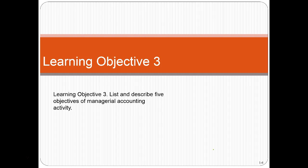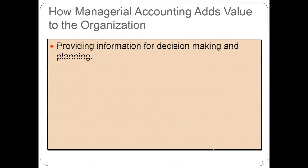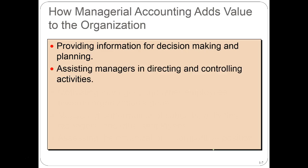Learning objective three: list and describe five objectives of a managerial accounting system. Everything we do falls into one or more of these core objectives. First, providing information for decision making and planning. When we put a theme park in place, there's a lot of analysis involved as to whether it's going to be financially beneficial — long-term estimates in terms of revenue to see if it's a good decision. Second, assisting managers in directing and controlling activities, putting data together in a quantifiable way so that we can analyze it.